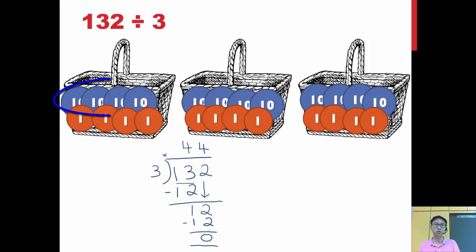So let's check. See, I got 1, 2, 3, 4 tens, which makes 40. 1, 2, 3, 4 ones, which makes 4 ones. So total, I have 44. 44 in each basket. Now how do I check whether I'm correct? I can take 44 times 3. 4 times 3, 12. 3 times 4, 12, plus 1, 13. So I get back 132, which was my original sum. So that means I'm correct.